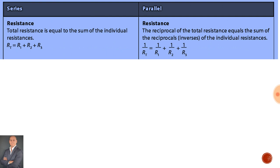In summary: in a series circuit, total resistance is equal to the sum of the values of the resistances. In a parallel circuit, the reciprocal of the total resistance equals the sum of the reciprocals of the individual resistances.